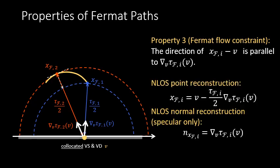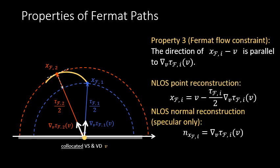The Fermat flow constraint says that if we know the length of a Fermat path and its gradient, then we can reconstruct the point on the non-line-of-sight surface through a simple geometric operation. We intersect the sphere we described earlier, centered at the virtual source, with a line that is parallel to the gradient and passes through the virtual source.